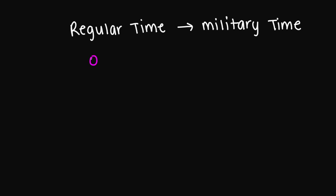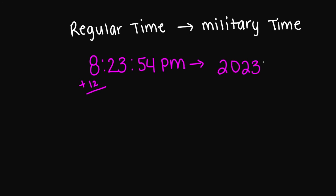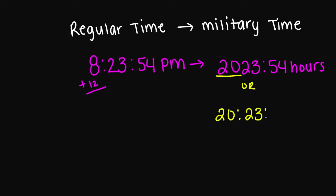Let's try 8:23:54 seconds p.m. Since I'm going from regular time to military time, I'm going to add 12 to my hour number. So this is going to be 20:23:54 hours. My 8 is now 20 because we added 12 to the hour number. Or you're going to see 20:23:54 hours written like this.